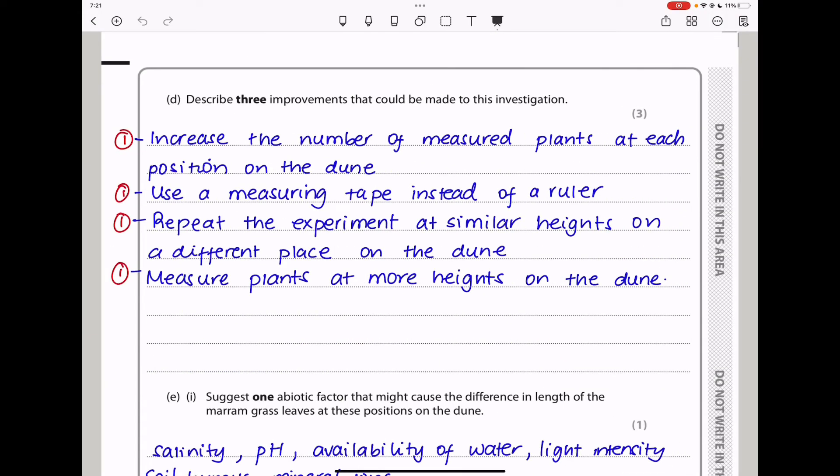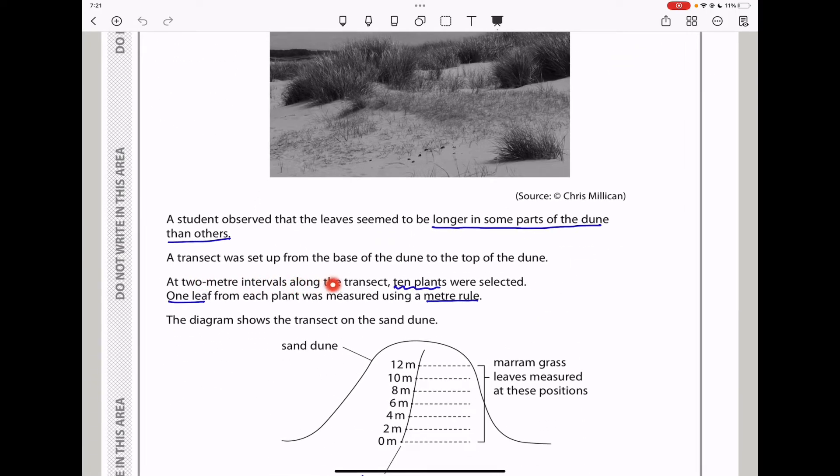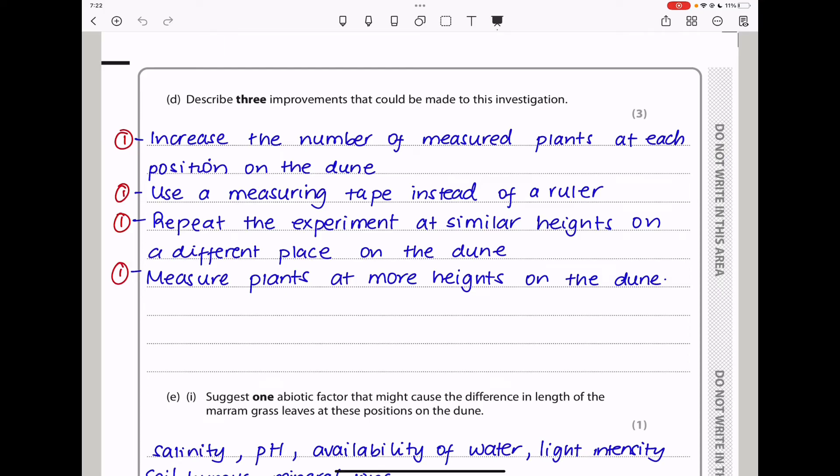Here they say, describe three improvements that can be made to this investigation. I want to take you back to the beginning, where they said how the experiment was carried out. So here they said at two meter intervals along the transect, 10 plants were used. Instead of 10 plants, maybe they could use 20 or 15, get more plants, and then measure the length of the leaves. That could improve the results. And also they could measure more leaves from each plant in order to improve the validity of the results. And finally, instead of using a meter rule, they could use a longer measuring tape in order to make the results more believable. So here I said, increase the number of measured plants at each position on the dune, use a measuring tape instead of a meter rule, and then repeat the experiment at similar heights on a different place on that same dune. And then finally, measure plants at more heights on the dune. All these points could lead to the improvement of the investigation.